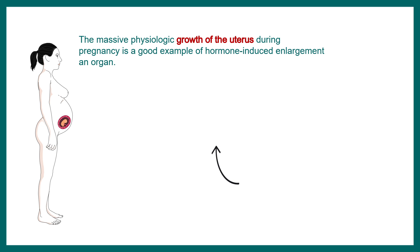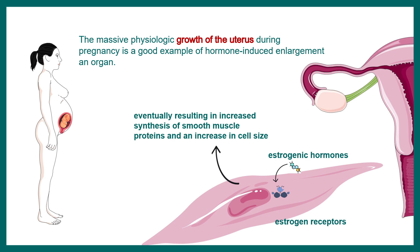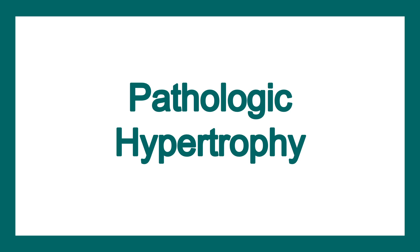A massive physiological example is growth of the uterus during pregnancy — a good example of enlargement of an entire organ. In this case, estrogen leads to larger endometrial cells and the smooth muscles become bigger, allowing the uterus to hold the entire fetus throughout pregnancy.